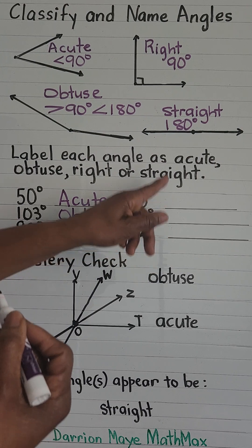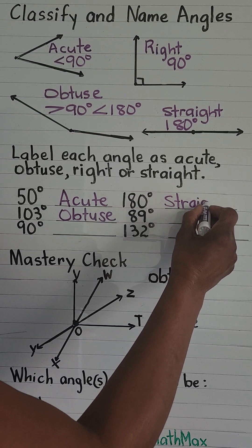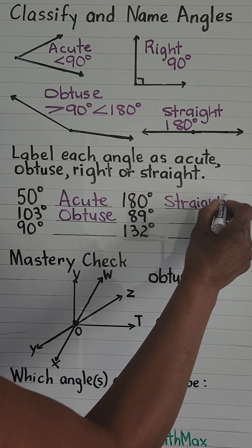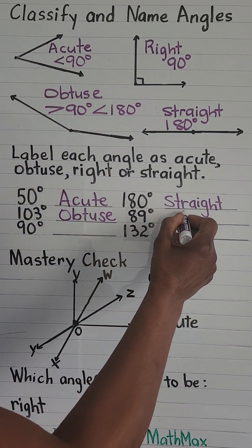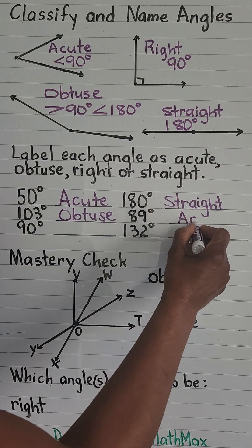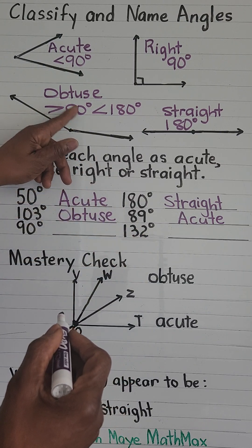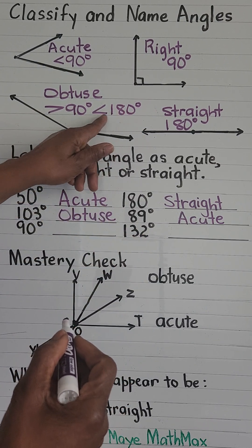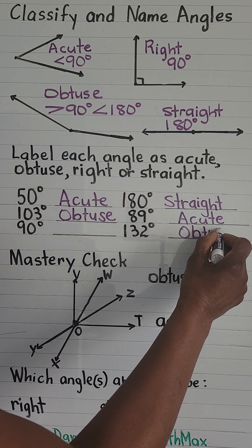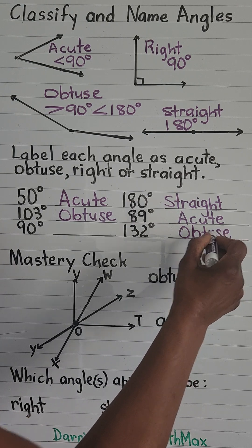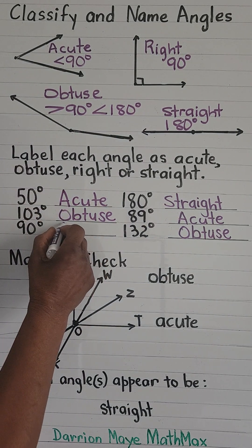And a straight angle is exactly 180 degrees. 89 degrees: less than 90 — acute. 132 degrees: more than 90 but less than 180 — obtuse. 90 degrees: right.